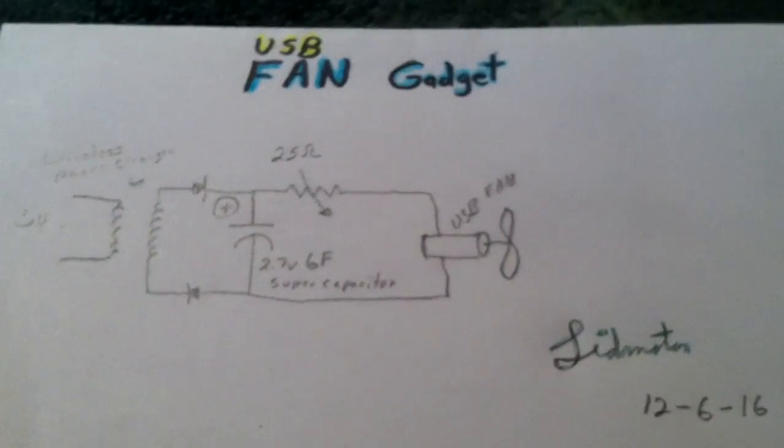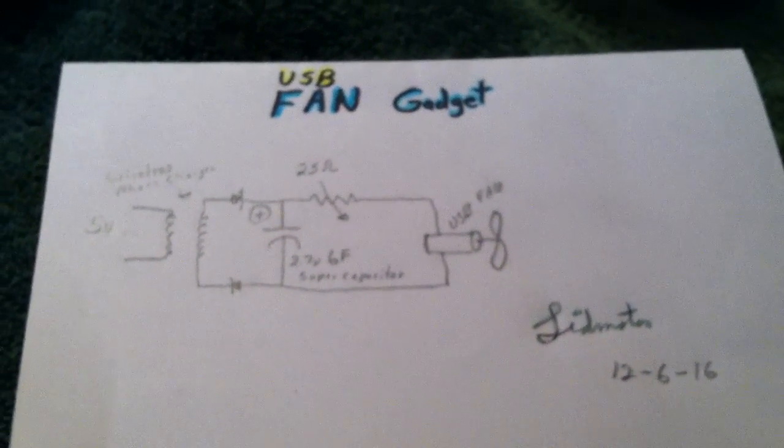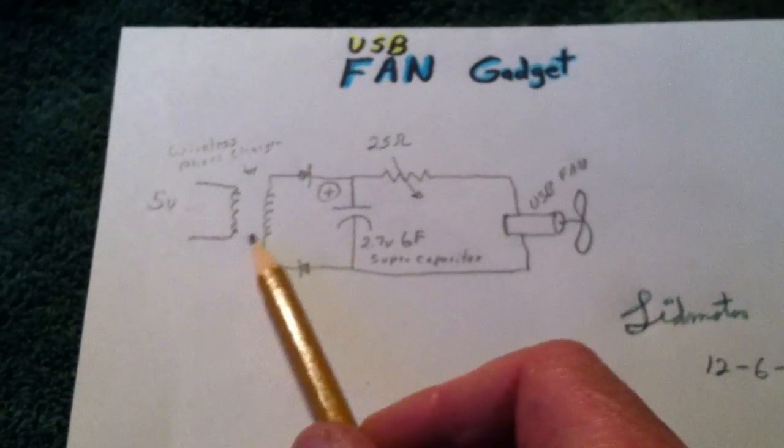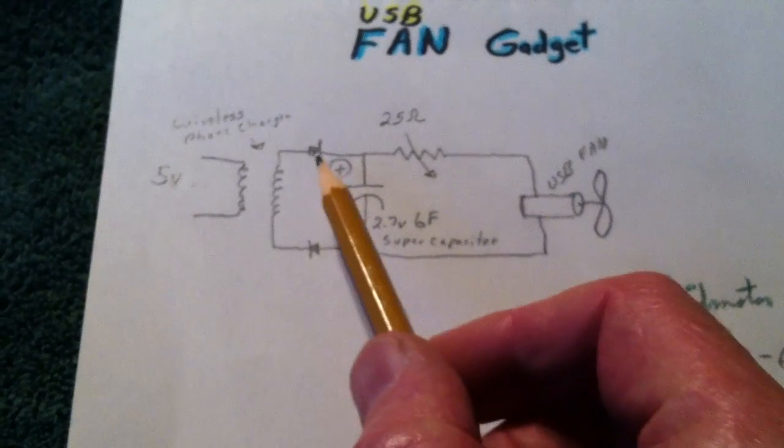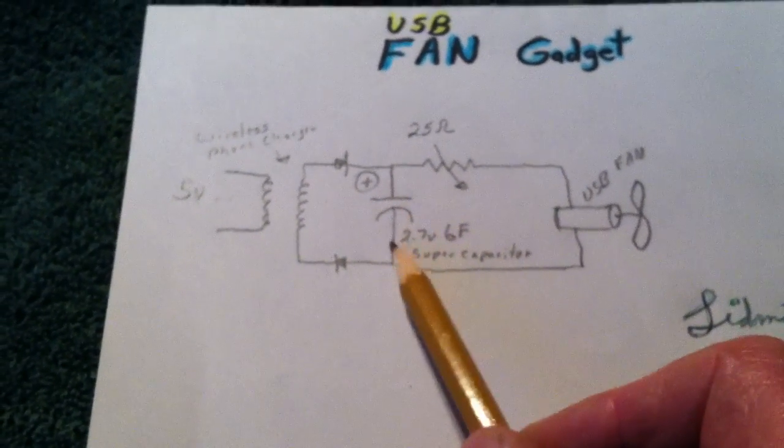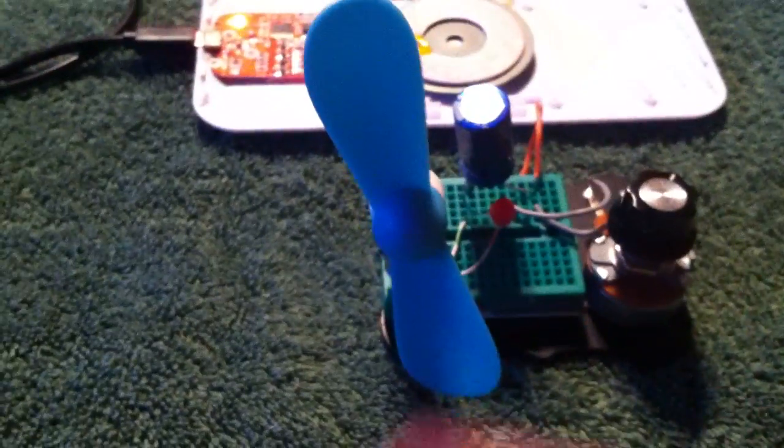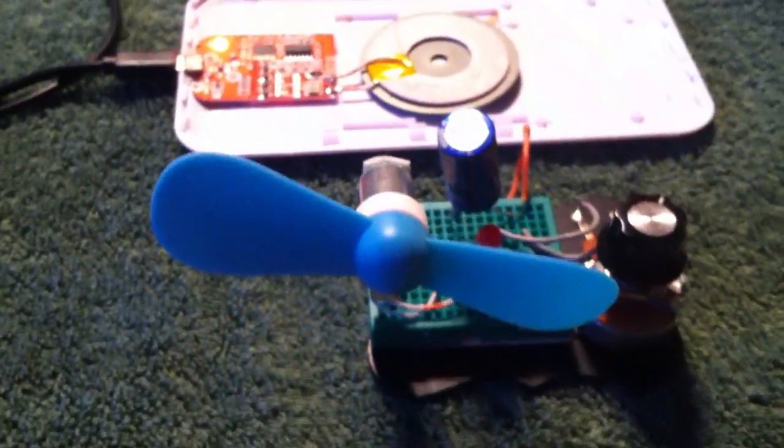And this is the gadget. It's got this wireless charging capability. Basically, it rectifies an AC into a DC. I'm going to store it up in a super cap and then run it through this little circuit. But it's just a gadget. I just thought I would make something kind of fun for Christmas.